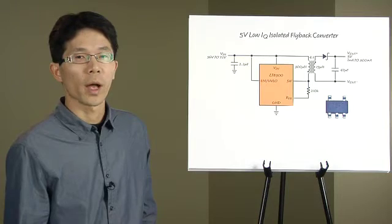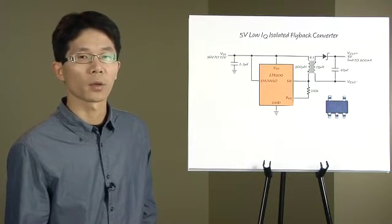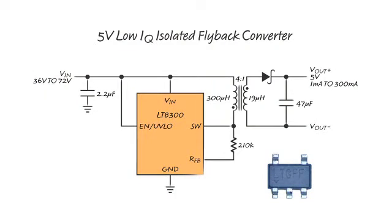Today I'm going to show you how to build a simple and efficient sub-2-watt isolated power supply with the new LT8300. This is a 5-volt, low IQ, isolated flyback converter from 36-volt to 72-volt input.